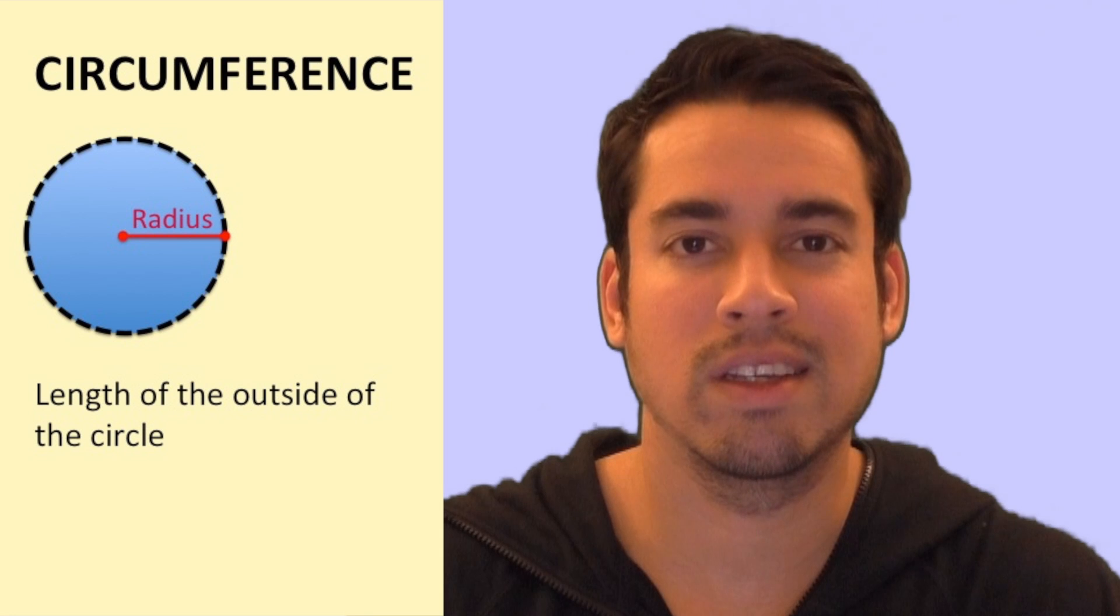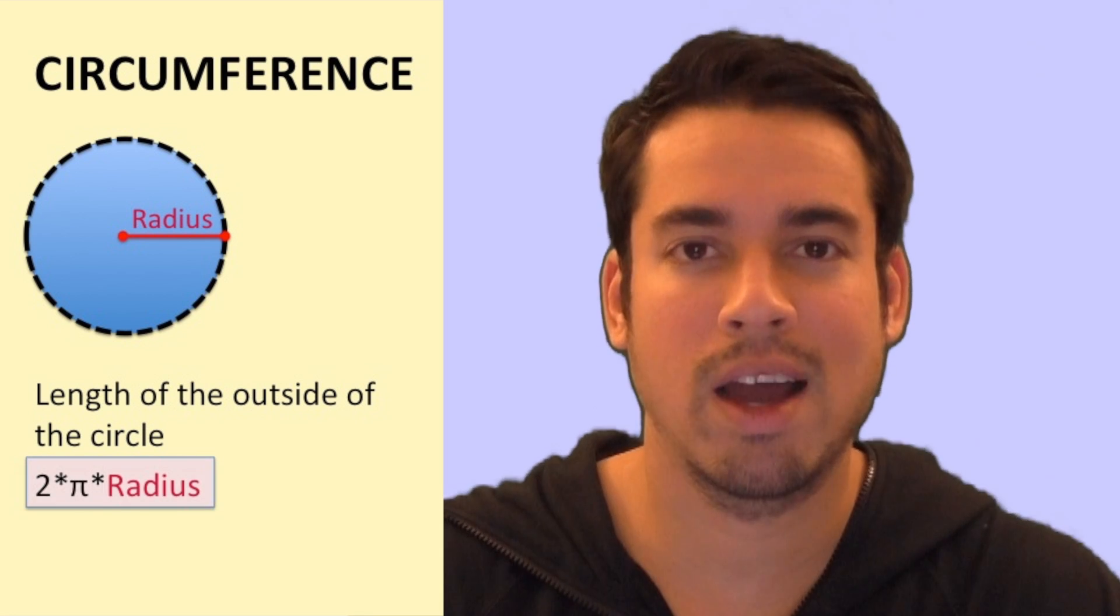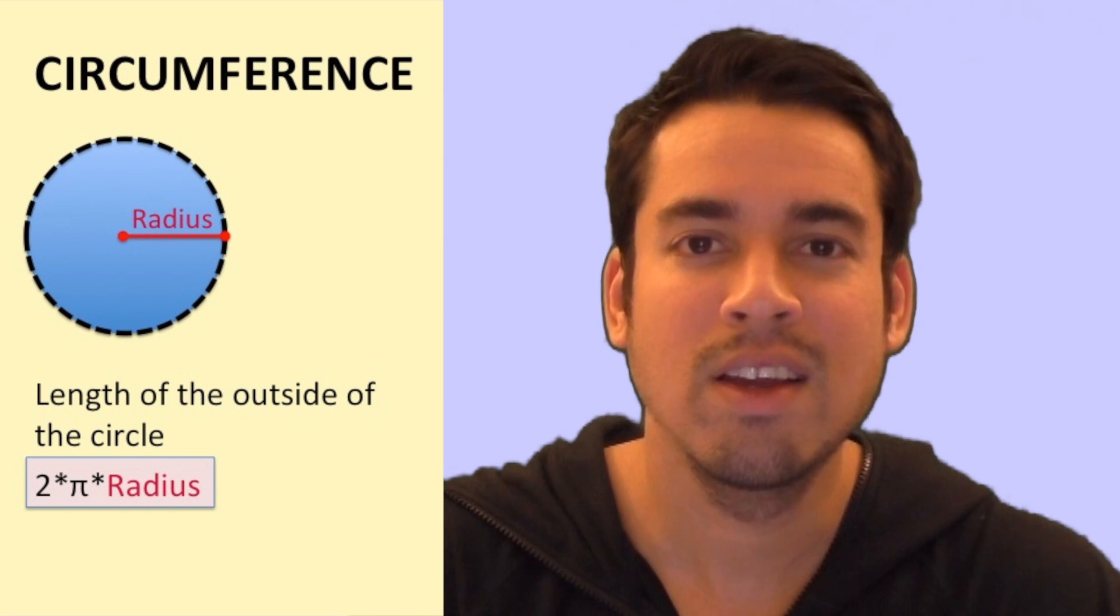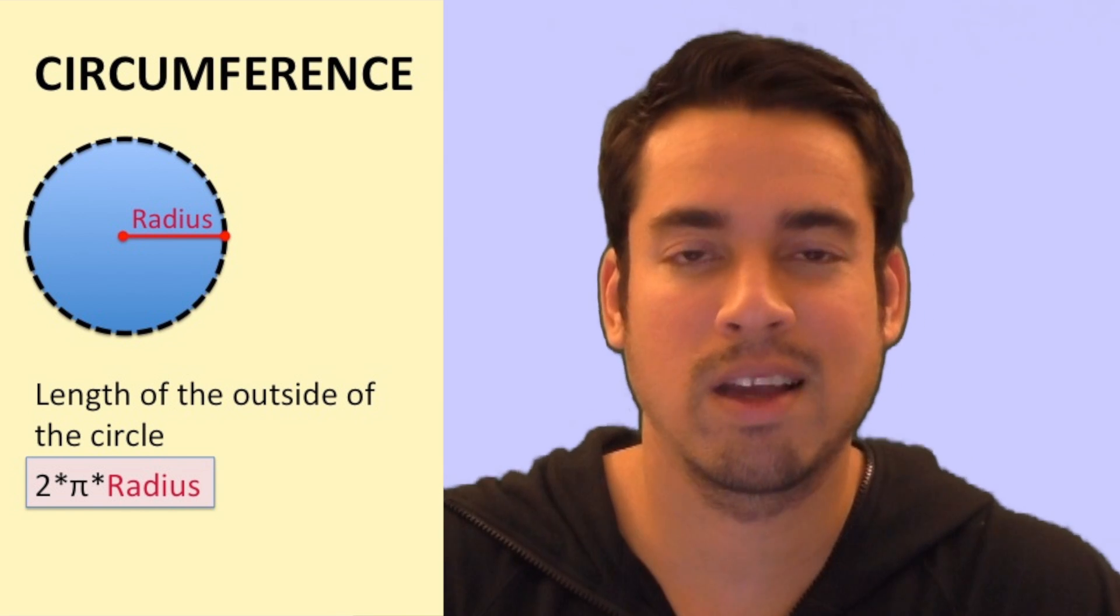And the formula simply is two times pi, pi is 3.14159, etc. Two times pi times the radius.